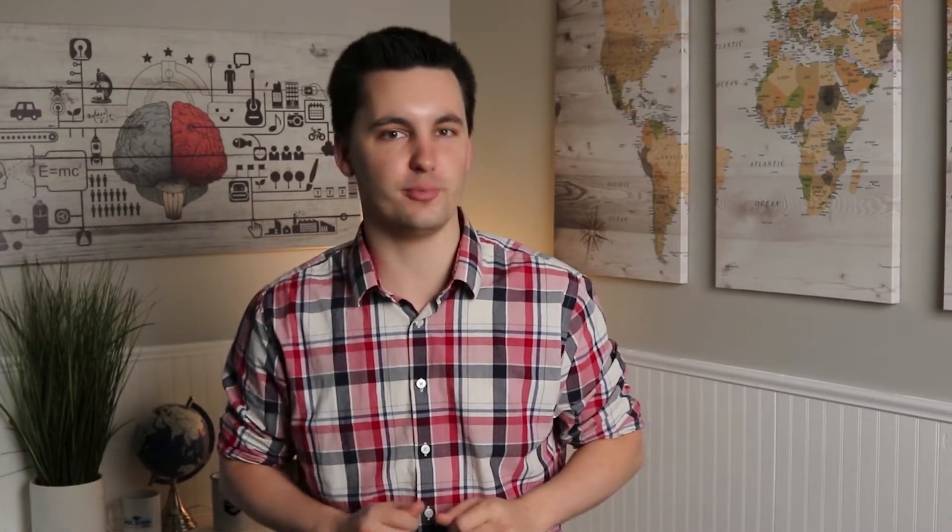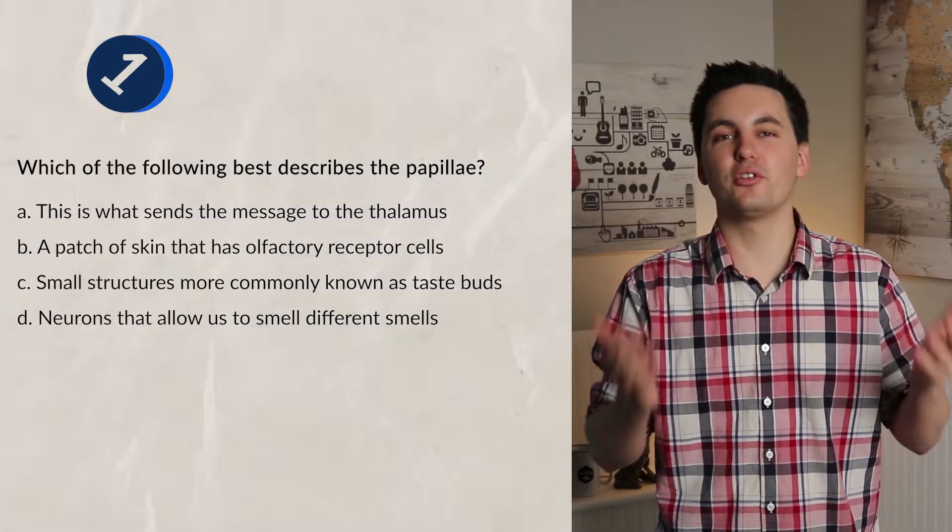Before we wrap up this topic review video, I want to connect back to our unit two. Remember from our previous topic review videos that in order for us to perceive a stimulus, an action potential must occur. If a stimulus does not hit a certain level of intensity or meet our threshold, we will not perceive the taste or smell.